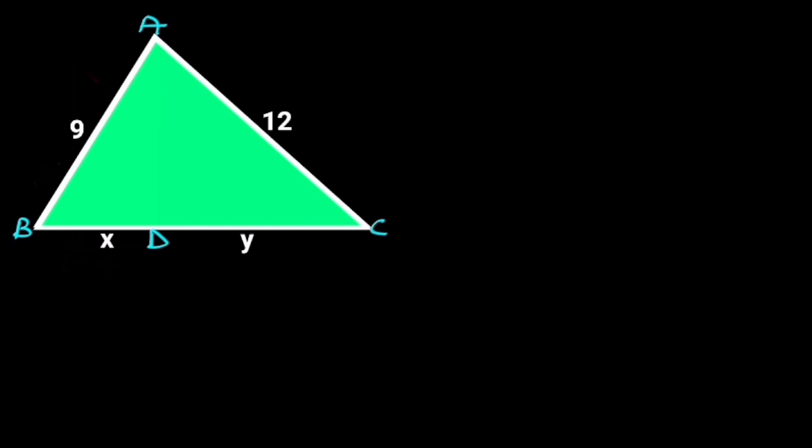Let's observe that there are three right triangles in this figure: triangle ACD, triangle ABD, and triangle ABC. To find the value of x, y, and z, we are going to apply Pythagoras' Theorem in each triangle.